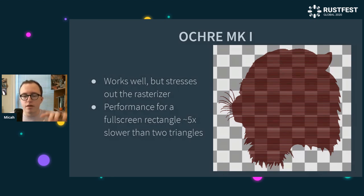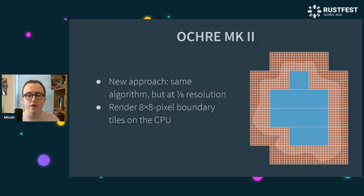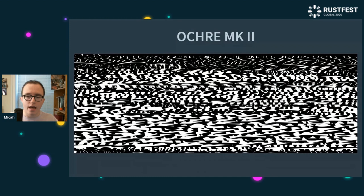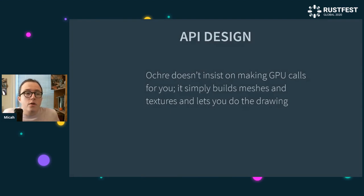So I tweaked this approach and ended up closer to what Pathfinder does, but basically doing more on the CPU whereas Pathfinder does more on the GPU. I break the shape down into edge tiles and spans — rather than edge pixels and solid spans, I have 8×8 edge tiles and then solid 8×N spans in the middle. I pack these into an atlas texture, upload that to the GPU, and render it all using triangles to make up those rectangles. This is an example texture atlas for the tiger — this is what it looks like: all those little 8×8 chunks put in order in the atlas. So that's how Ochre works.